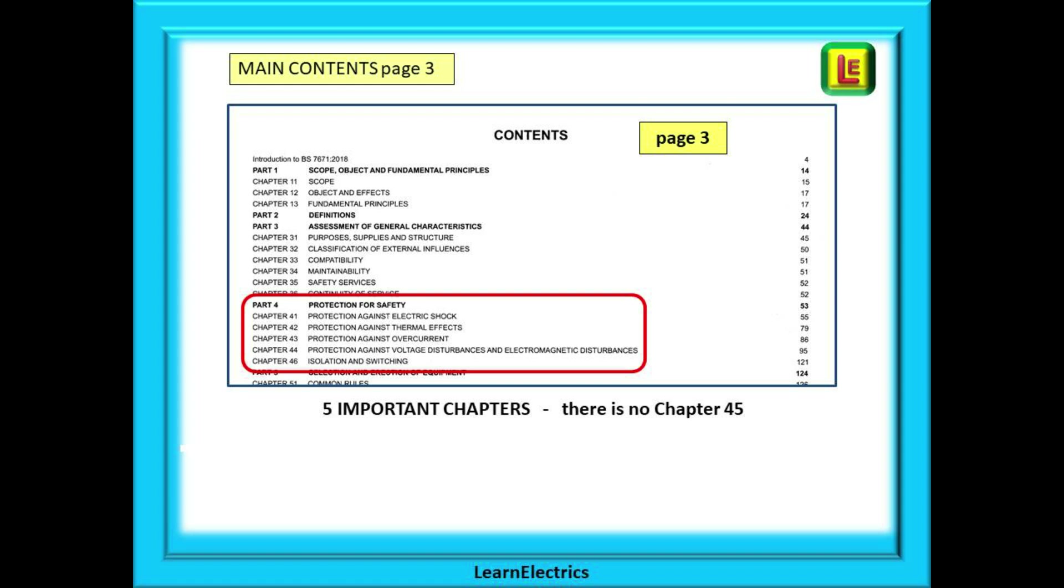We can begin at the most important page of the wiring regulations: page 3, the main contents page. We will find Part 4 shown here along with the titles of each chapter and the page numbers where they are located. There are just five chapters as Chapter 45 no longer exists, and these chapter titles are going to be your clues to finding the exam question answers very quickly.